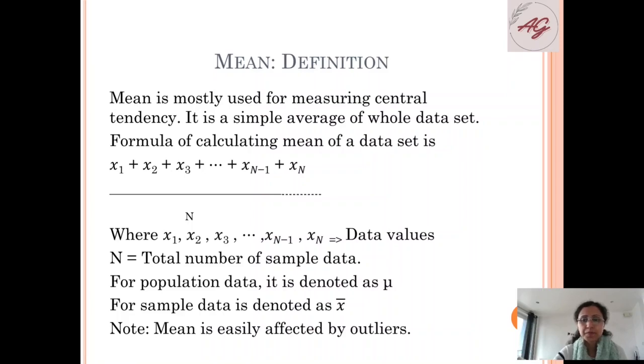Let us understand the example of mean. I have some book prices in Kolkata and Patna. When I calculate this book price in Kolkata for mean, I am getting 560 and for Patna it is 230.